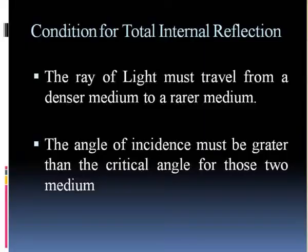Then, what are the conditions for total internal reflection? One, the ray of light must travel from denser medium to a rarer medium. Two, the angle of incidence must be greater than the critical angle for those two medium.